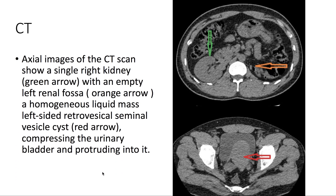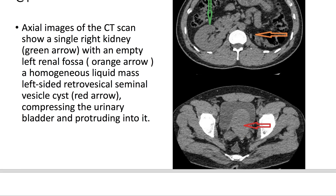On CT, we see a single right kidney with an empty left renal fossa. There's also a homogeneous left-sided retrovesical seminal vesical cyst compressing the urinary bladder and protruding into it.